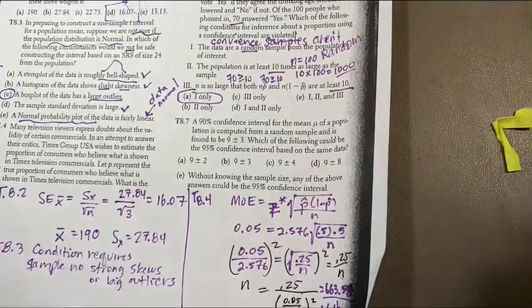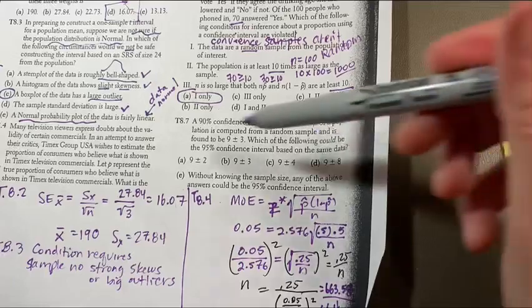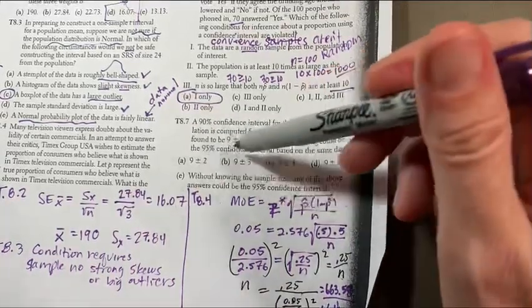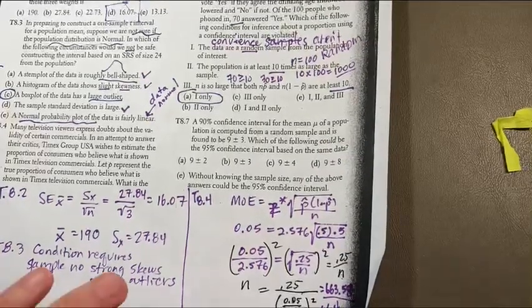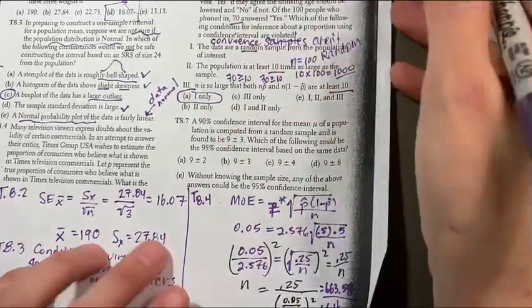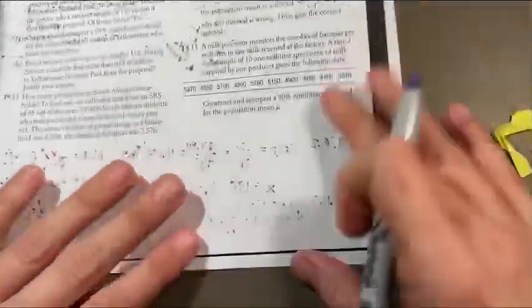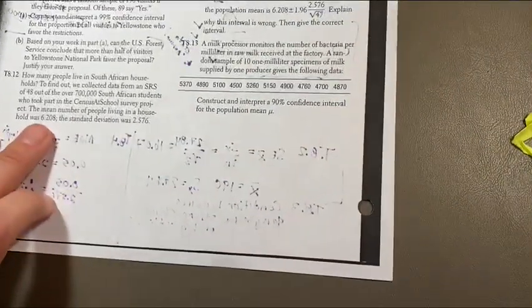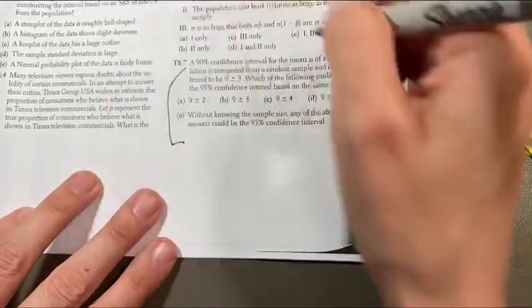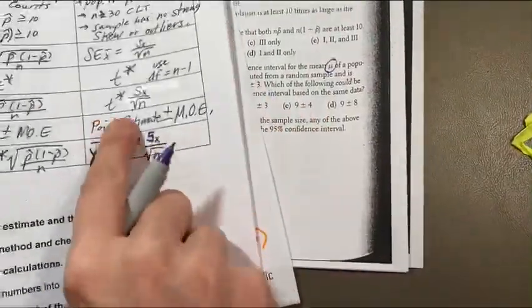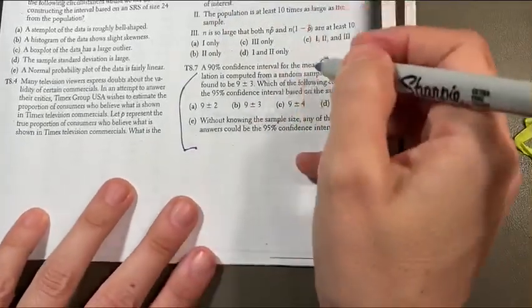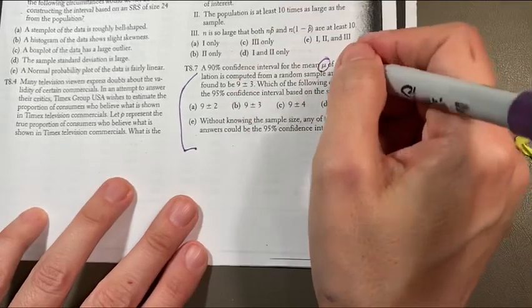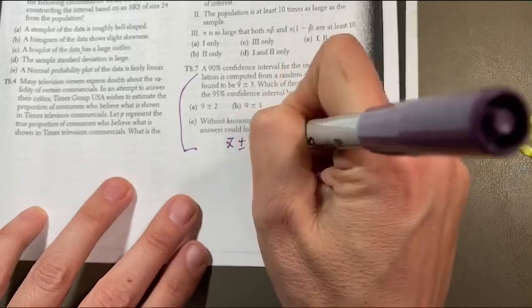8.7. A 90% confidence interval for mean mu of a population is computed from a random sample and is found to be 9 plus or minus 3. Which of the following could the confidence interval be based on that same data? Okay, so what is happening here? Well, we're using a formula. I'm going to try to keep doing it on my piece of paper here.